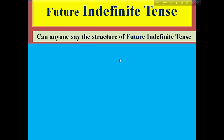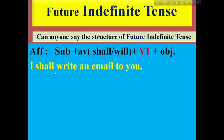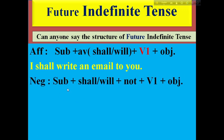Dear students, look attentively. Can you say the structure of future indefinite tense? Yes, very good. This is the affirmative structure. For example: I shall write an email to you. The negative structure: Subject plus shall or will plus not, main verb present form, then object.